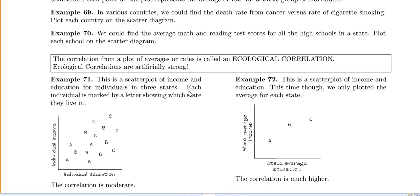So in example 71, so this is a scatter plot of income and education for individuals in three different states. So each individual is marked by a letter showing which state they live in. So all these A people live in state A. Then all the B people live in state B, etc.